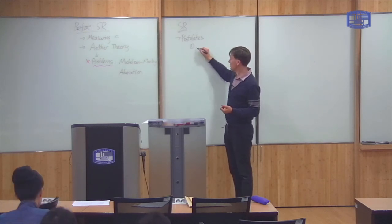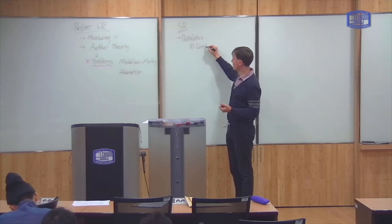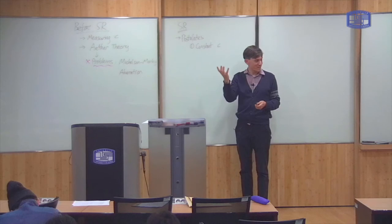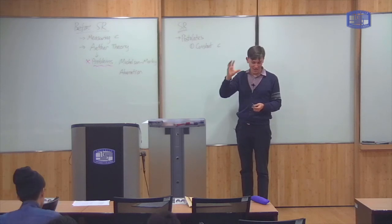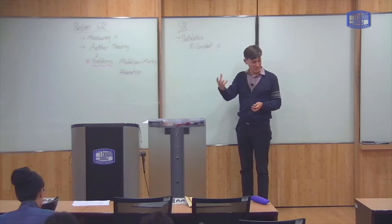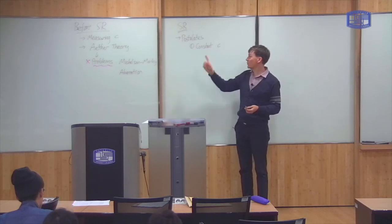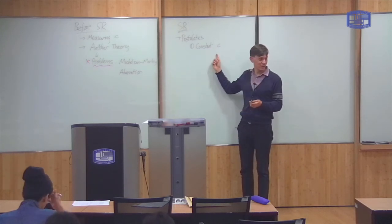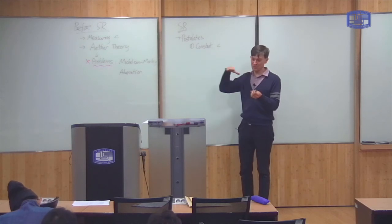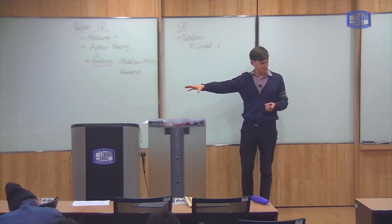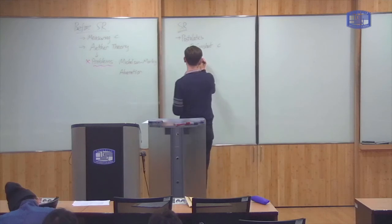The first postulate was that speed of light was a constant. Basically, any inertial observers who do experiments to measure the speed of light in a vacuum will always get the same result. No matter how fast you are moving, light always goes past you at the same speed. That's the first postulate.